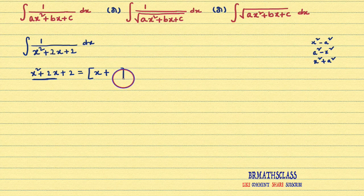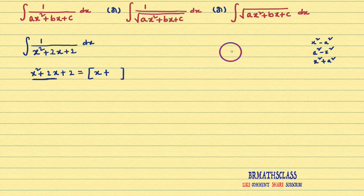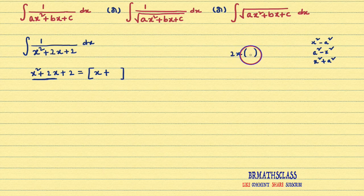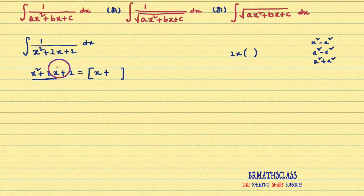Now, this is very, very important — please try to understand. Here, you need to write some number. That number we need to find. You always keep in mind 2x. It is not because 2x is there here; you always remember 2x. 2x into some number — after multiplying, you should get the expression that is there. Here, 2x is there, so we use 2x.